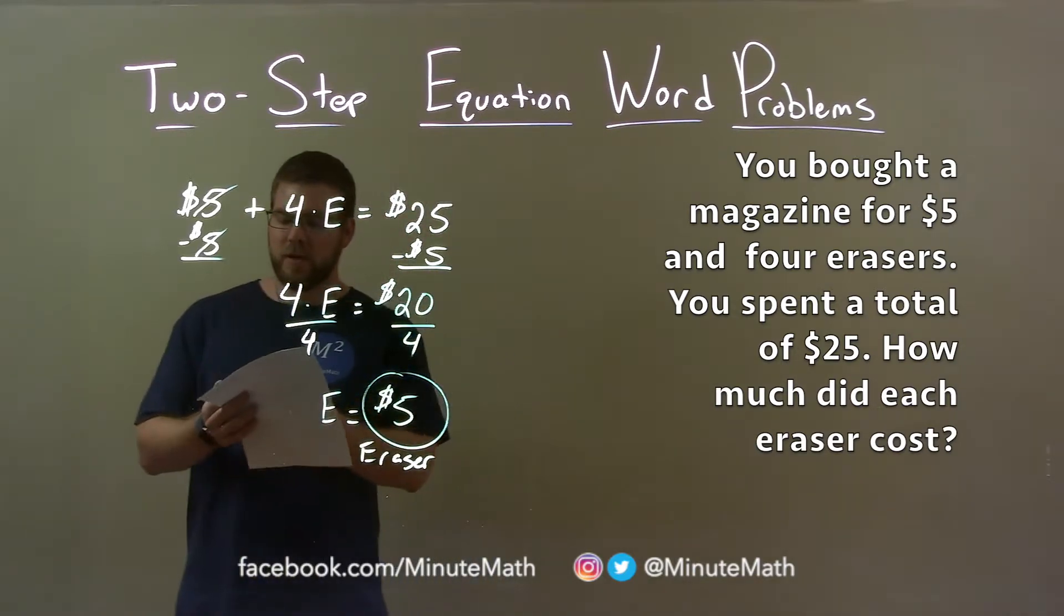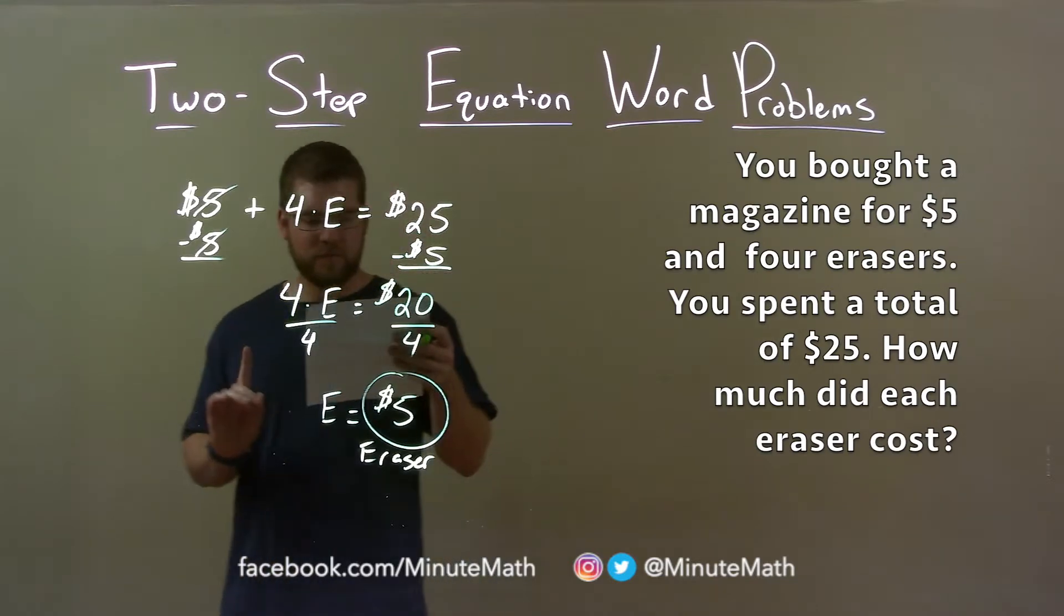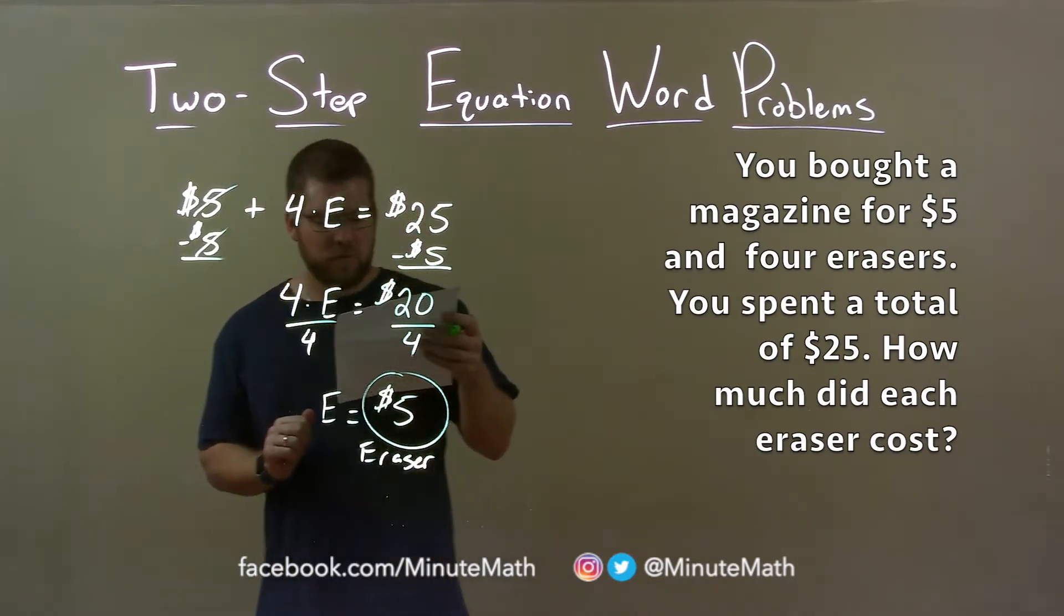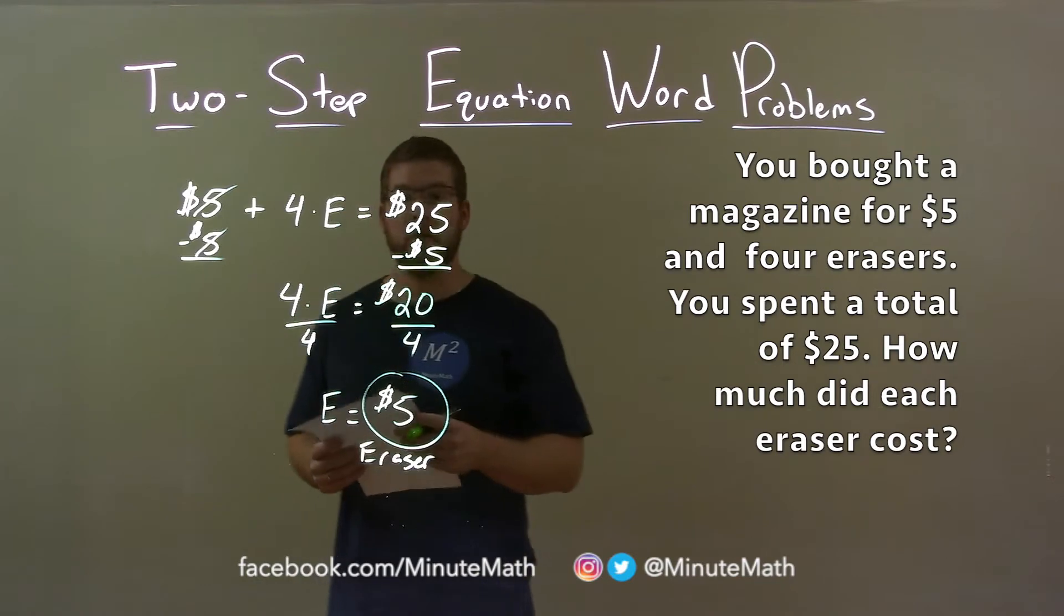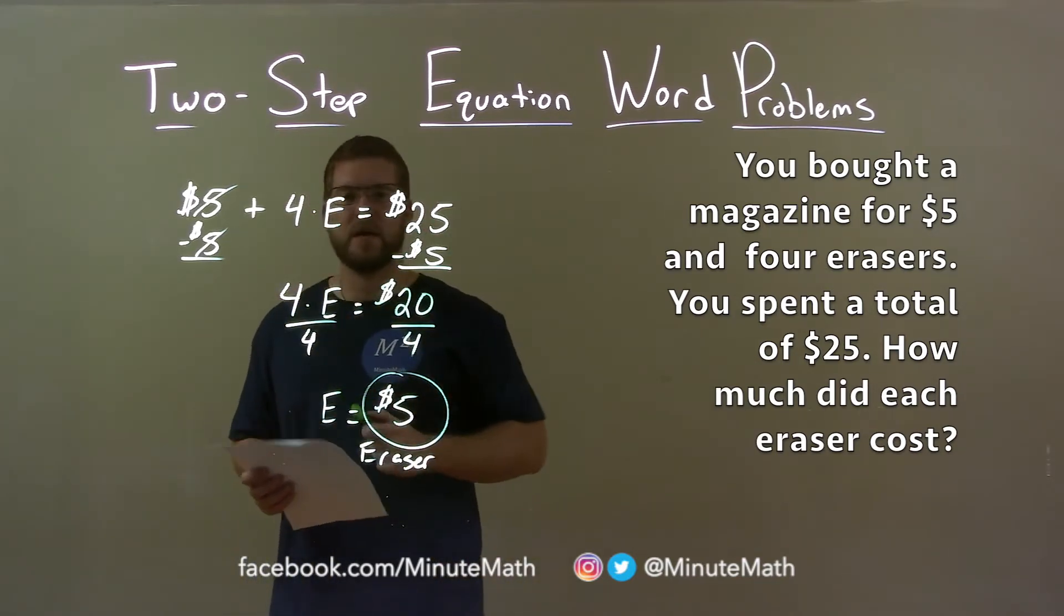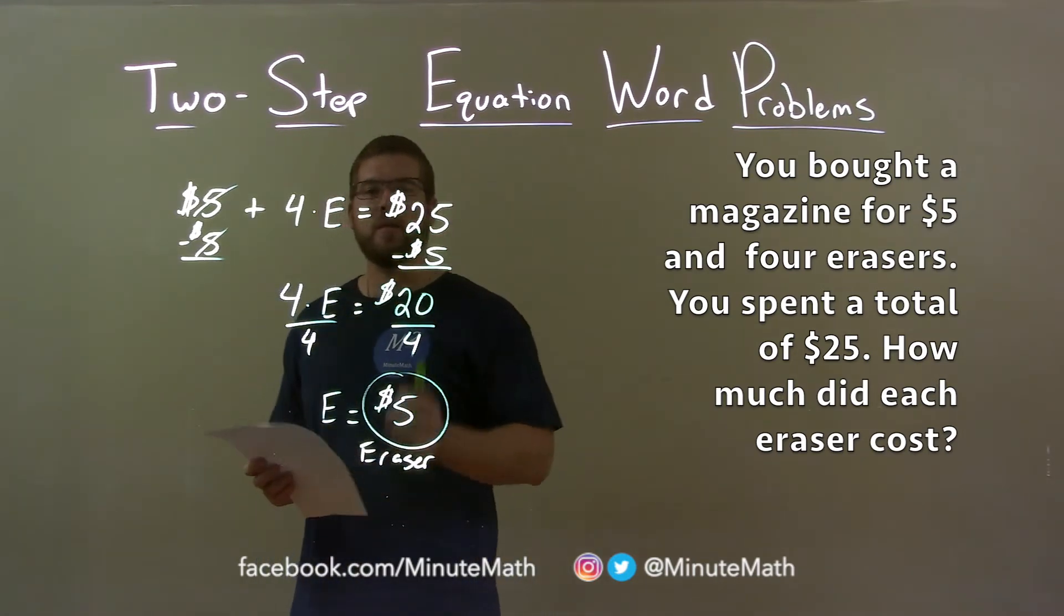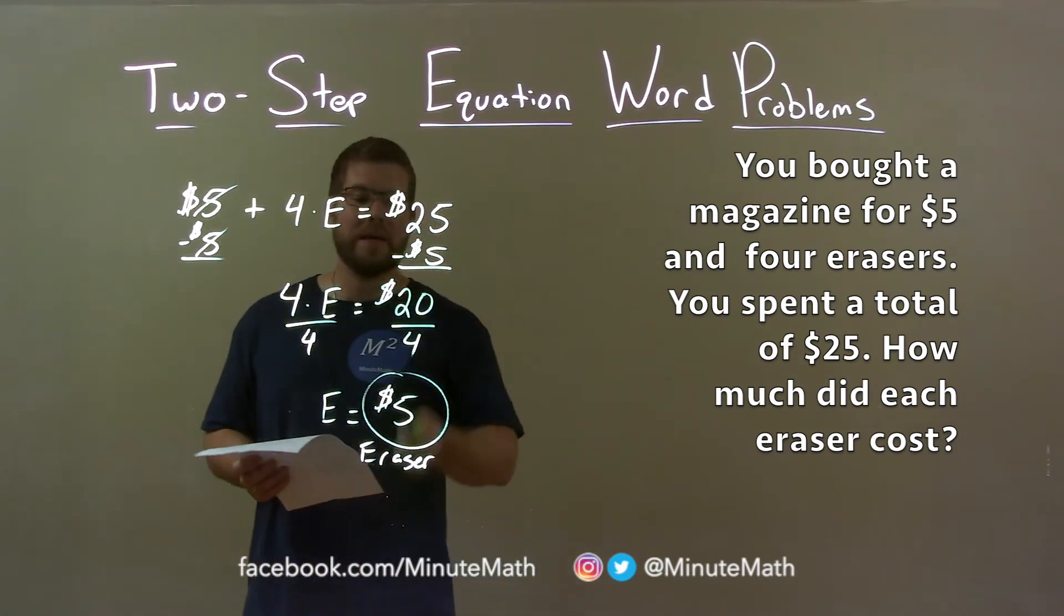So, quick recap. We're given the word problem here. You bought a magazine for $5 and four erasers. You spent a total of $25. How much did each eraser cost? With that information, we created the equation $5 plus four times E equals $25. We solved that for E, E being the price of each eraser, which came out to be $5.